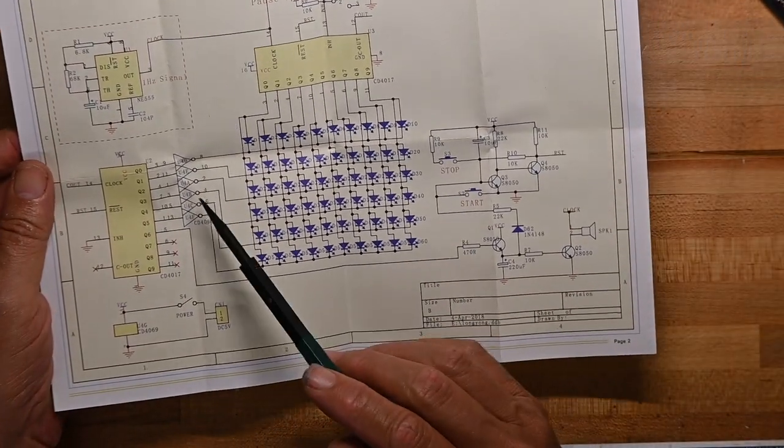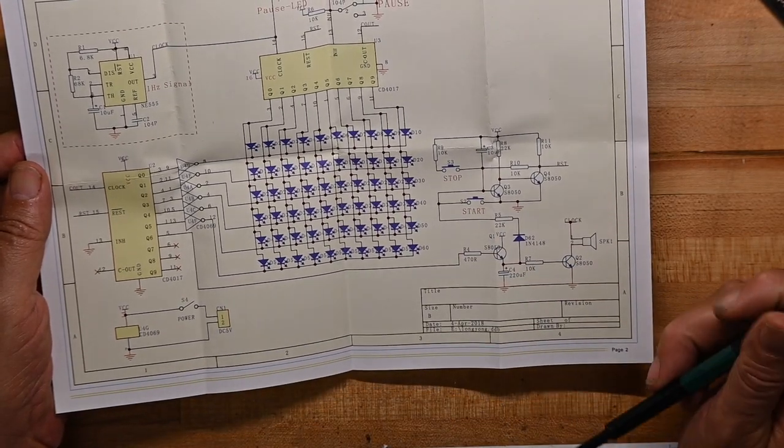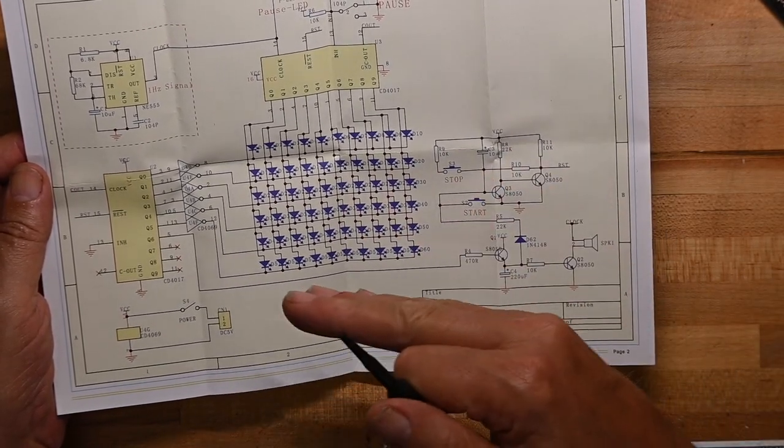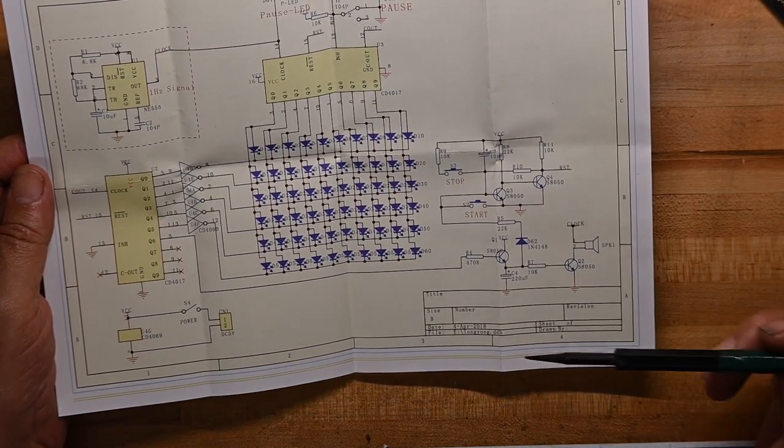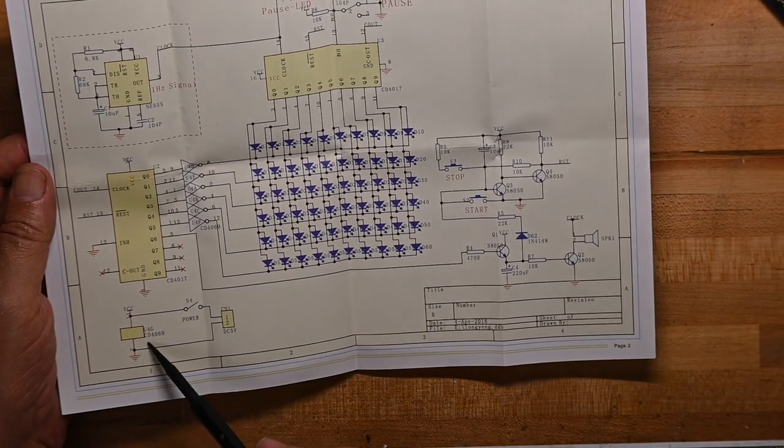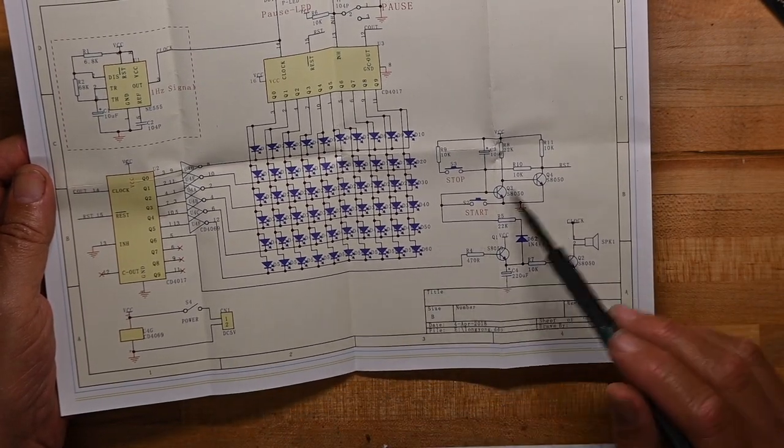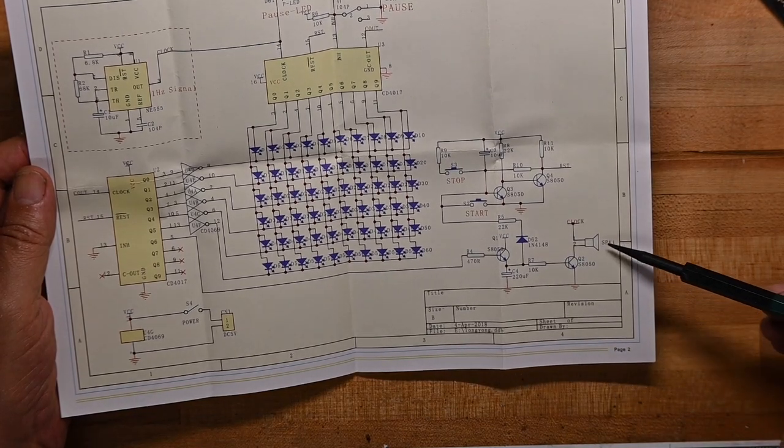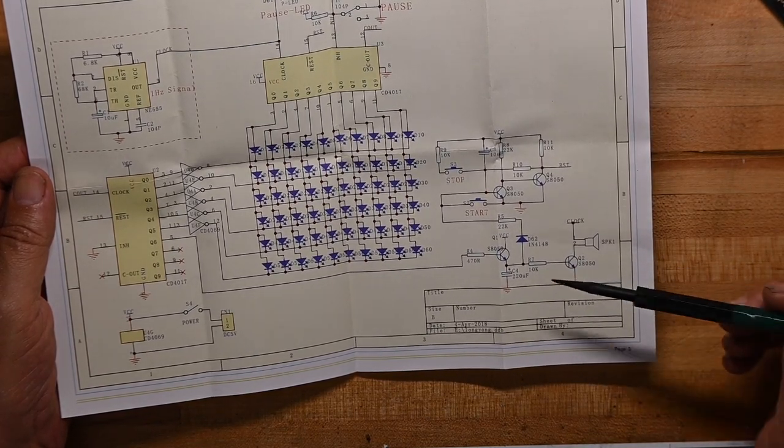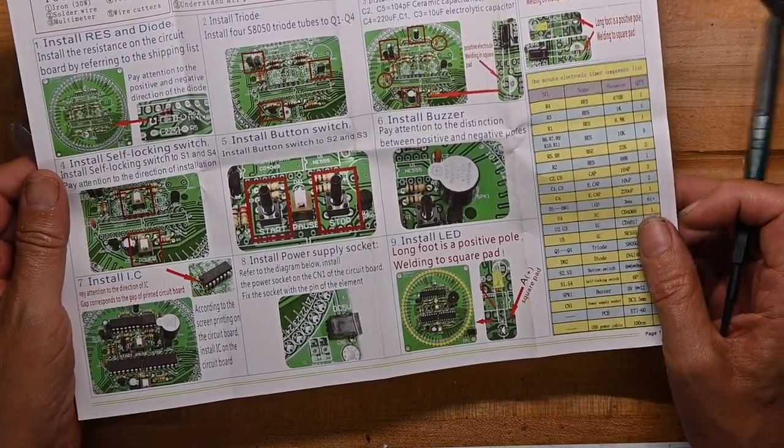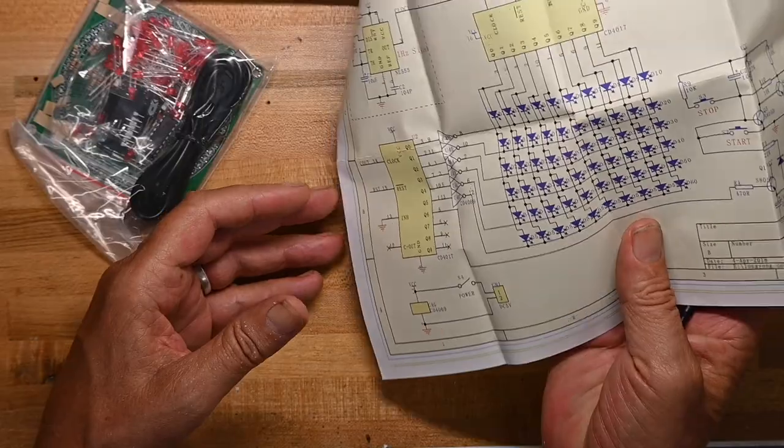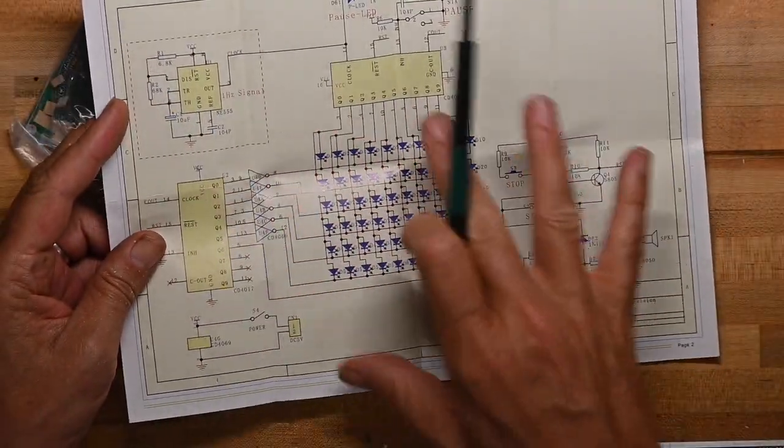And then a couple of counters. This is a CD4017, and this is a 4017. Are there two of them? That's interesting. Those are decade counters to actually light up the LEDs as the thing counts across, I'm assuming. And then power and your stop start and all that, and a little buzzer speaker, and a couple of transistors. So again, a straightforward, well-documented, and good exploring kit.